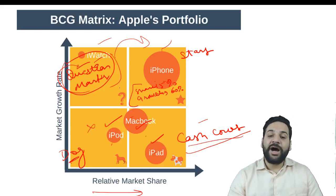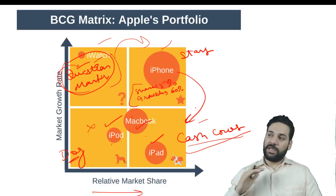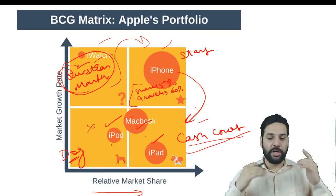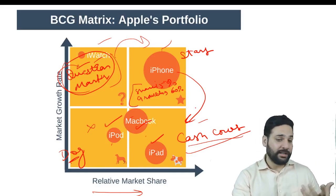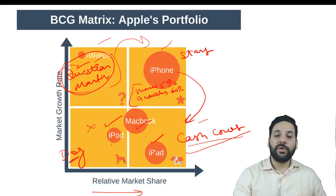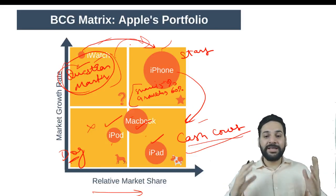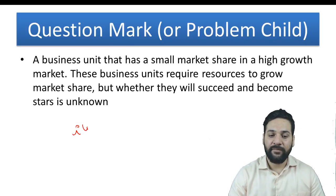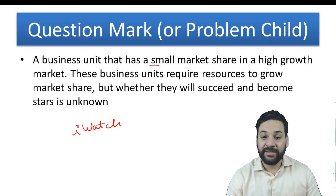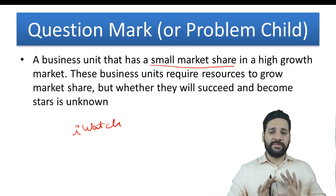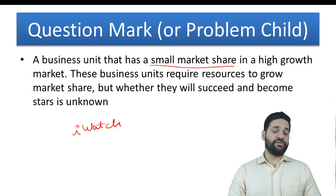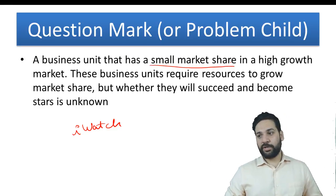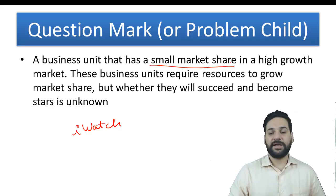If successful, a star will become a cash cow when the industry matures. That's the problem Apple faces — iPhones are slowly becoming cash cows as the smartphone industry matures. To cover this, Apple is trying to convert iWatch and wearables into stars. A question mark — like iWatch — is a business unit with a small market share but a high overall market growth rate. The growth rate of wearables is really high but Apple's market share is low, with other brands like Fitbit and Xiaomi having significant market share.